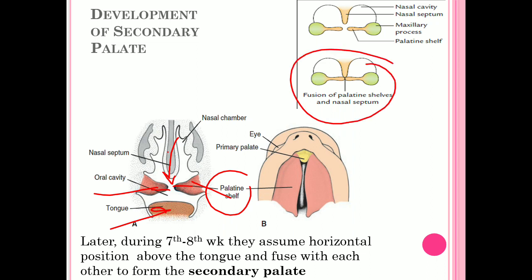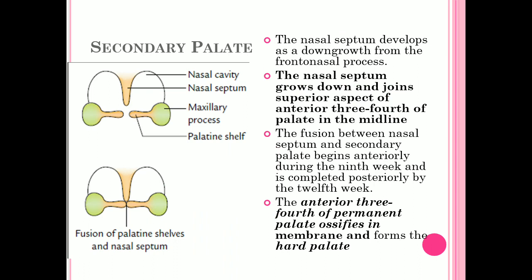After fusion of the two palatine shells and the nasal septum, the secondary palate is formed. The nasal septum is a downward growth from the frontonasal process — the median nasal process moves downward and joins the palate in the midline at the junction of the anterior 3/4 and posterior 1/4 of the palate.